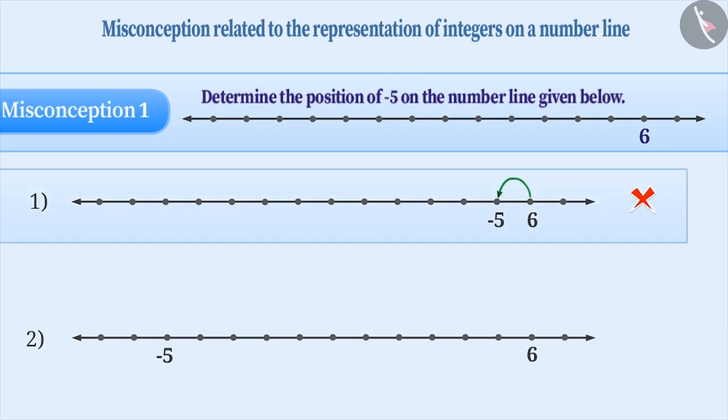To find the correct position of minus 5, first find the position of 0. To do this, move 6 places to the left of number 6. By doing this, we arrive at 0.